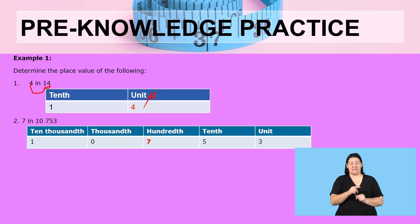The place value for 7 is a hundredth. The place value for 5 is a tenth. And the place value for 3 is a unit. Therefore, the question was to determine the place value of 7 in the number 10,753, so the place value will be a hundredth.